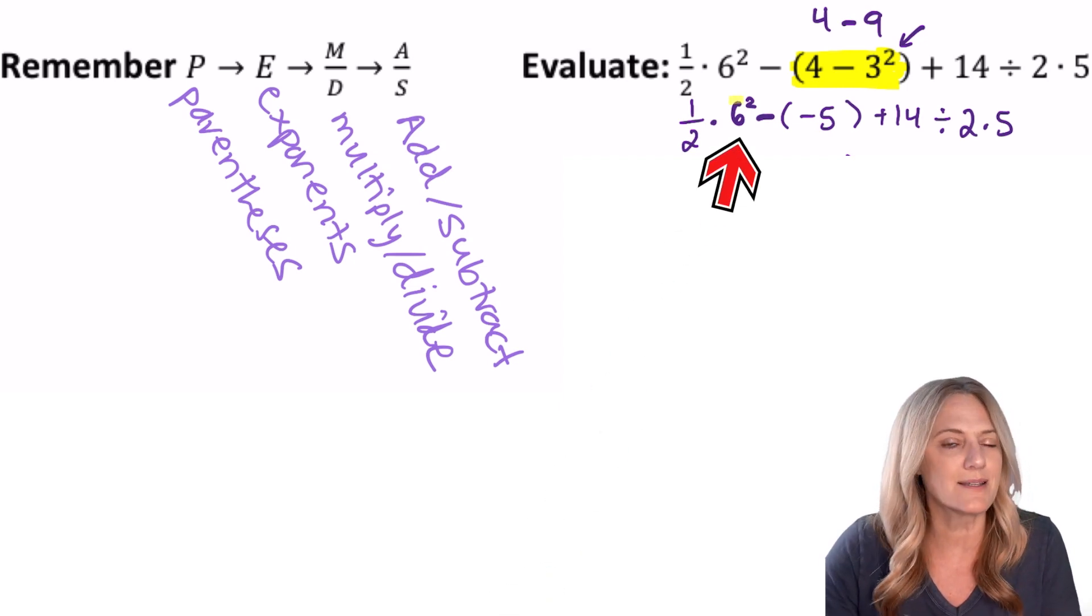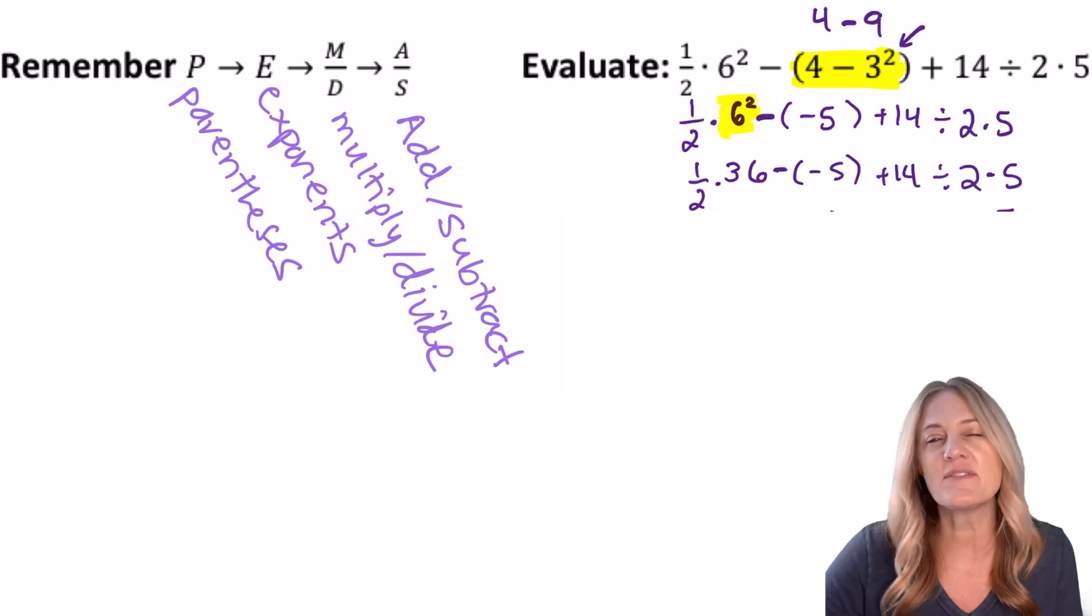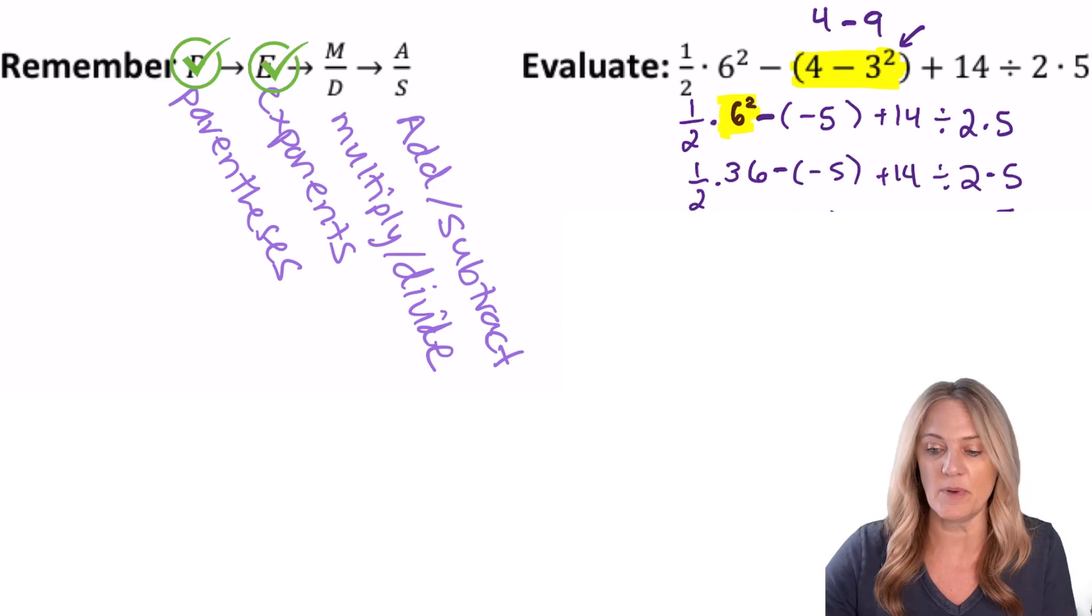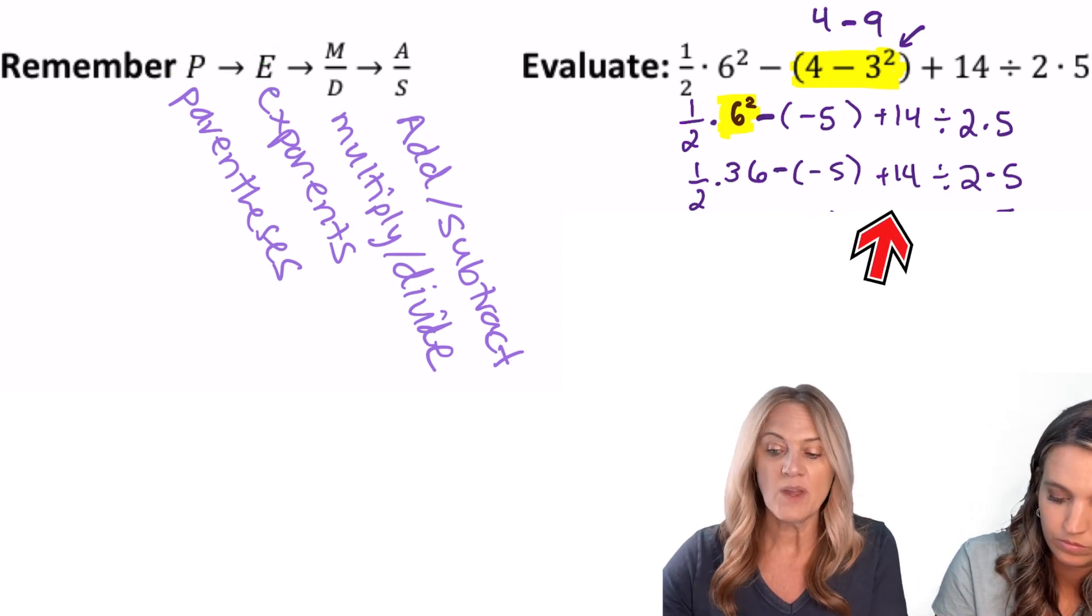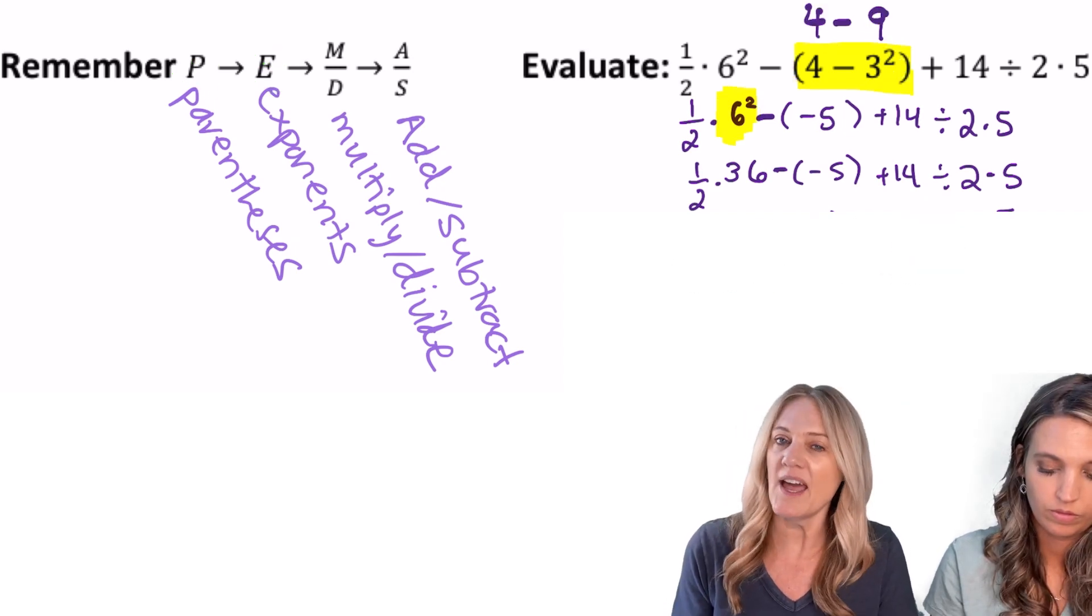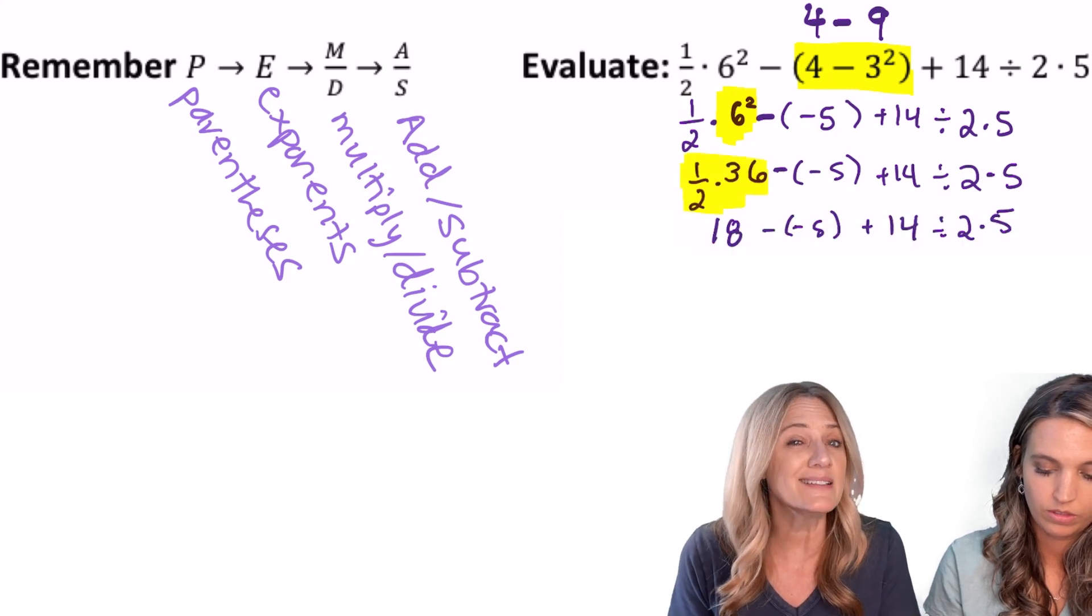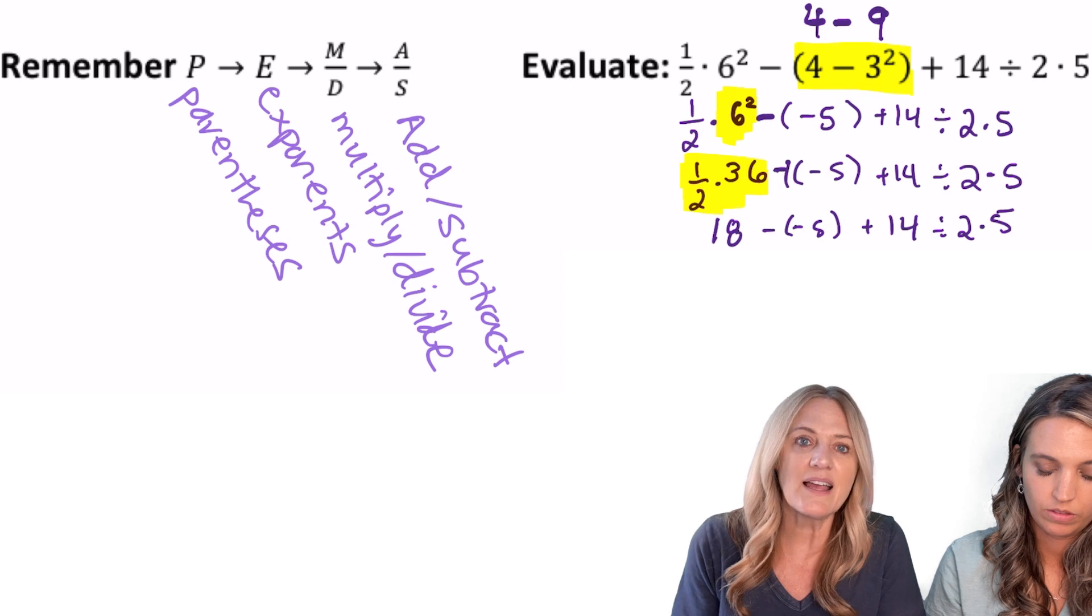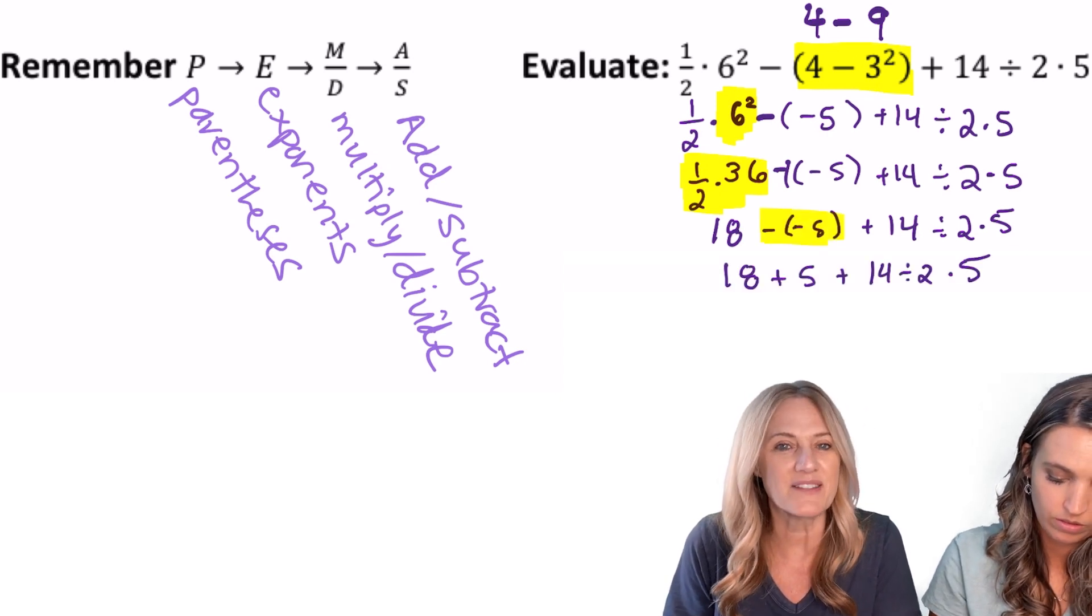All right, double check. Yep, we've taken care of parentheses and exponents. The next thing is multiply and divide, in order from left to right. The first part of that is ½ times 36. Well, that's 18. Then I see minus a negative 5. Well, that's like negative 1 times negative 5, which is positive 5, so a plus 5.